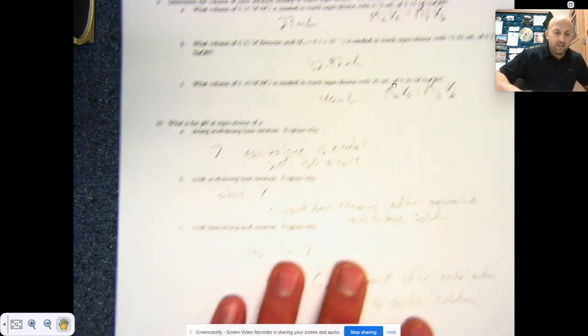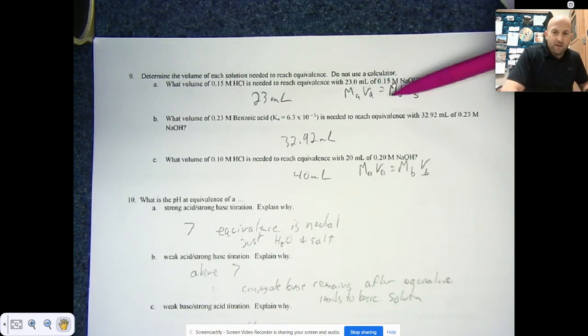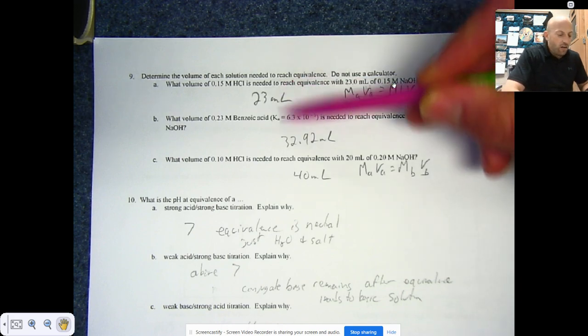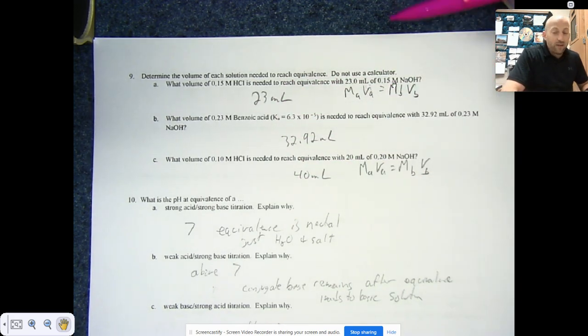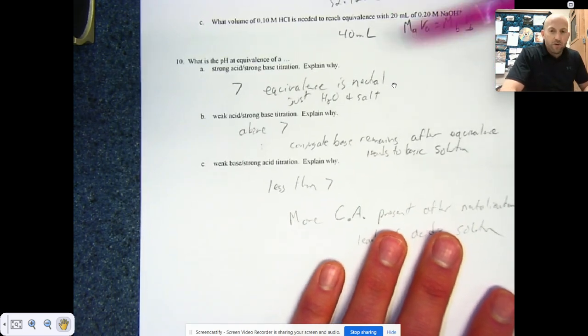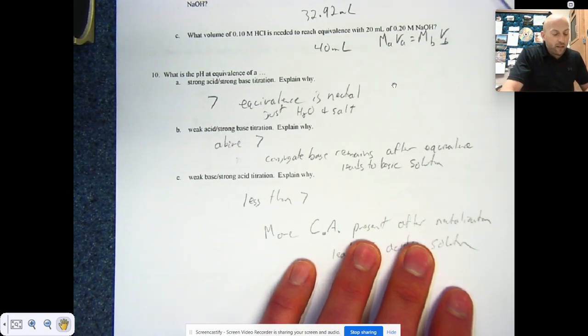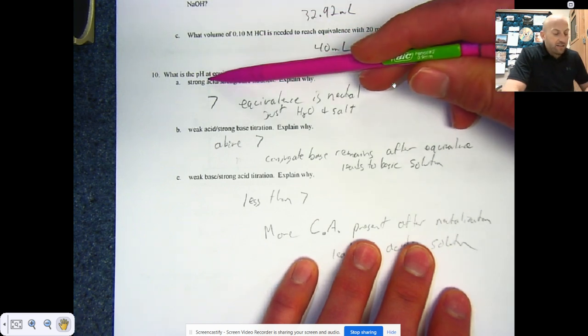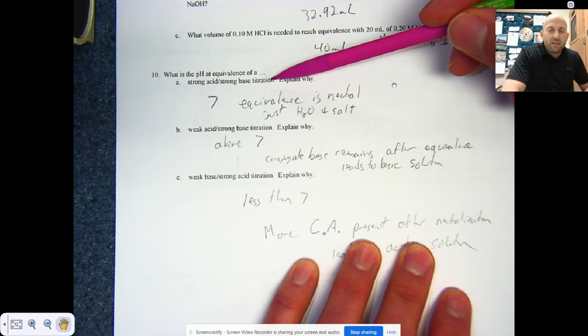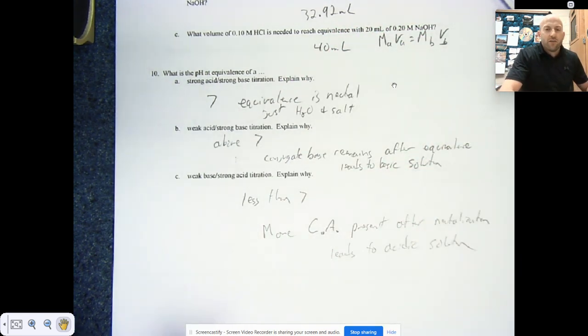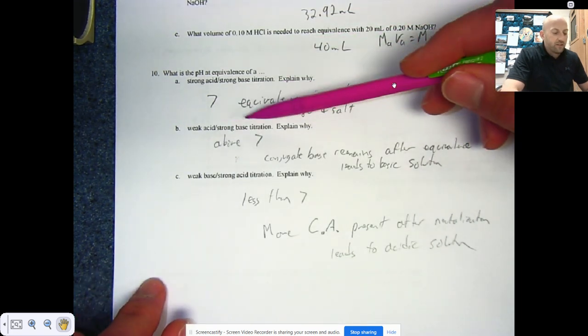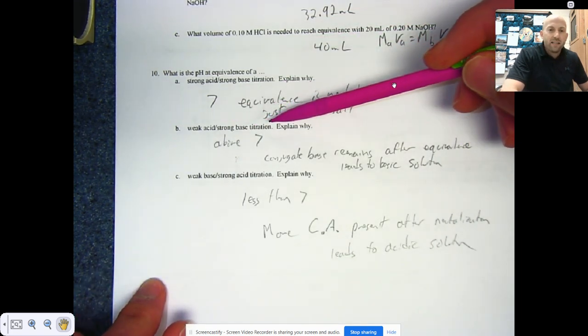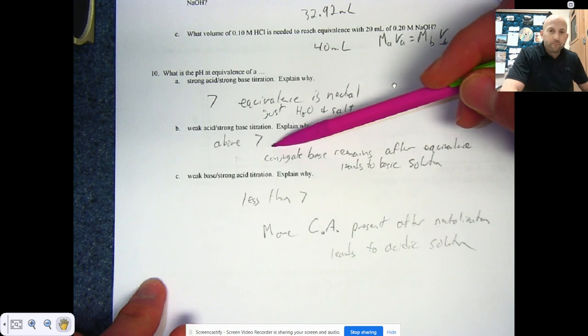I think that should help you get started, not to give you the entire thing. And the last page, these are just some applications of the MaVa = MbVb. All of these are pretty simple, pretty straightforward. Number ten, I think this is important, try this. Here's the explanation of it. pH of an equivalence in a strong acid strong base titration, pH 7, why? Because they completely offset each other. At equivalence, all we have is water and salt.